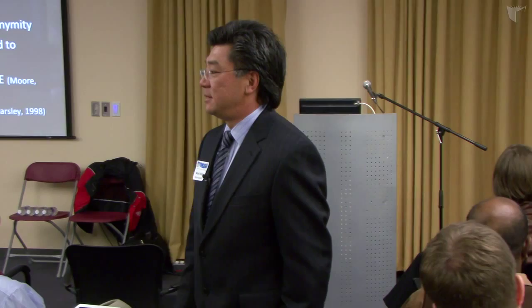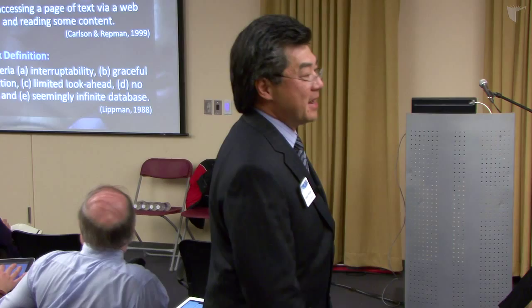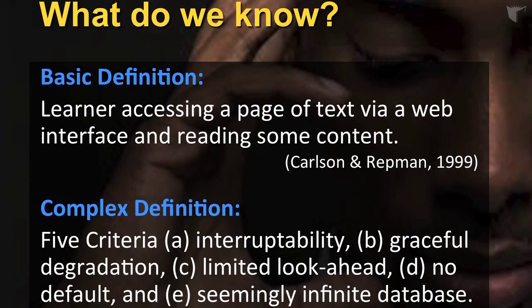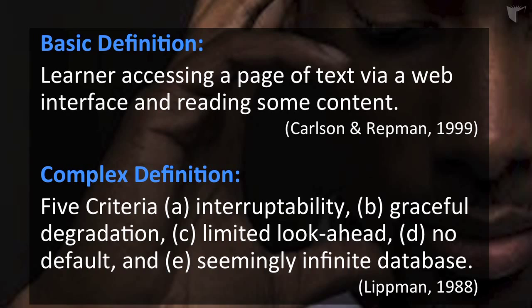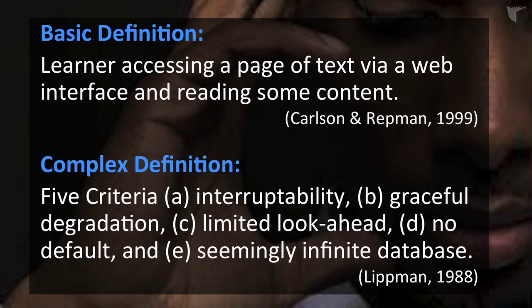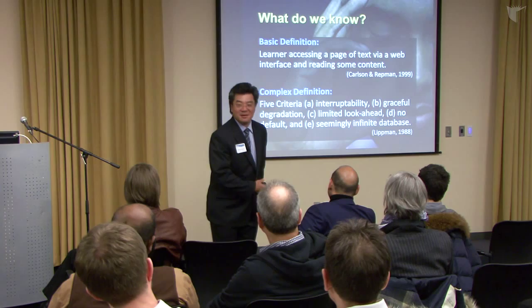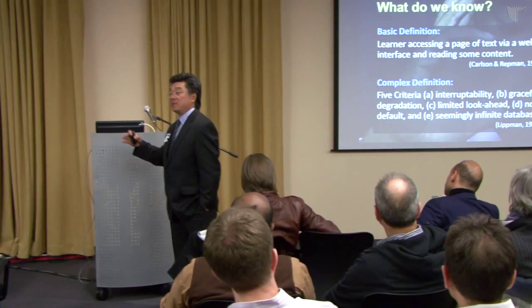What else do we know? Reading the literature, you find many definitions of interactions online and interactivity — from very basic, such as a learner accessing a page of text via a web interface, to more complex definitions with five criteria for interactivity including interruptibility and gradual degradation. The point is there are many definitions ranging from very simple to complex.